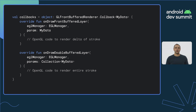Let's dig into the callback implementation. There are two methods necessary to support low-latency rendering: callbacks to render into the front and multi-buffered layers. OnDrawFrontBufferedLayer is invoked each time the in-progress stroke is updated. The contents are preserved across each call, so your rendering logic should only render the updates from the last invocation. Finally, when the contents are committed, OnDrawDoubleBufferedLayer will be invoked and the entire scene should be re-rendered here. This method provides a collection of all the parameters used to render the in-progress stroke.